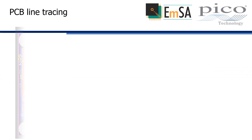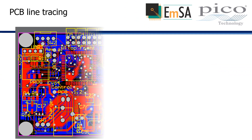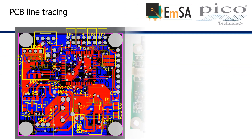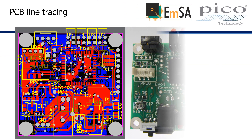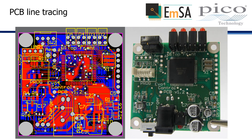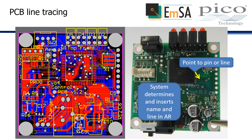When your augmented reality glasses have access to all information of a printed circuit board, one use case is that your glasses visualize hidden layers while you look at the PCB. Simply point to a pin or line and get the names of the pin or the entire connection network displayed.